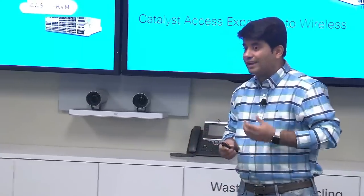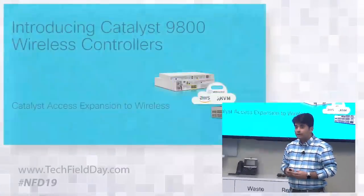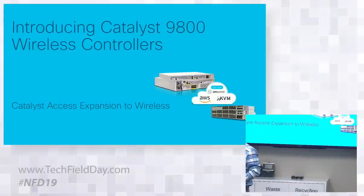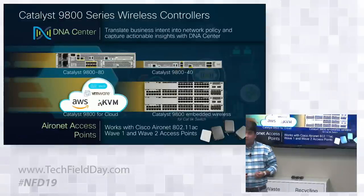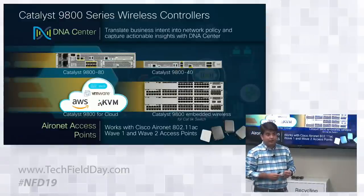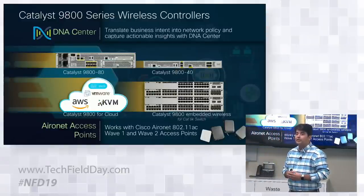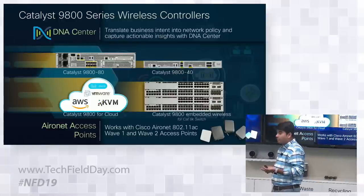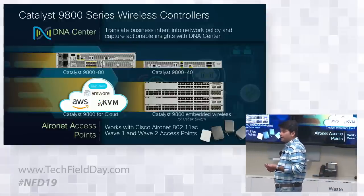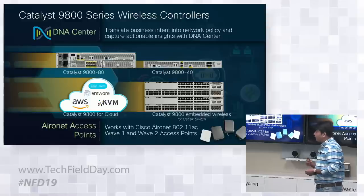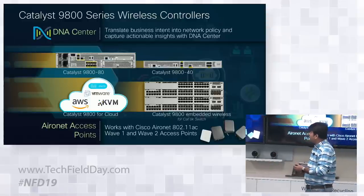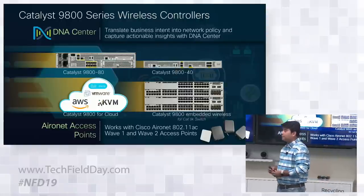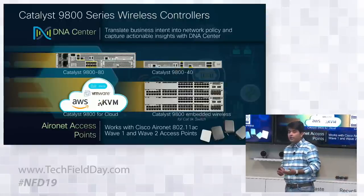Let me introduce you to the Catalyst 9800 Wireless Controller, which also represents Catalyst access expansion to wireless. Built from the ground up for intent-based networking, the Catalyst 9800 is part of the DNA Center architecture, which is built on three pillars: automation, policy, and assurance. Network automation translates your business intent into network policy, and network assurance captures actionable insights back to DNA Center, giving you granular visibility of your network.